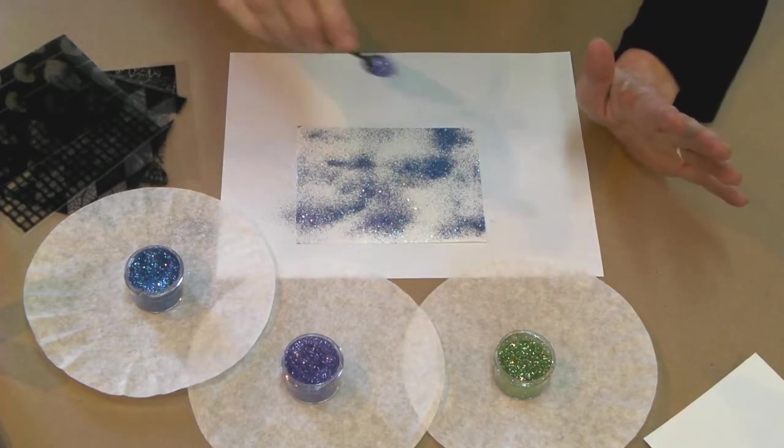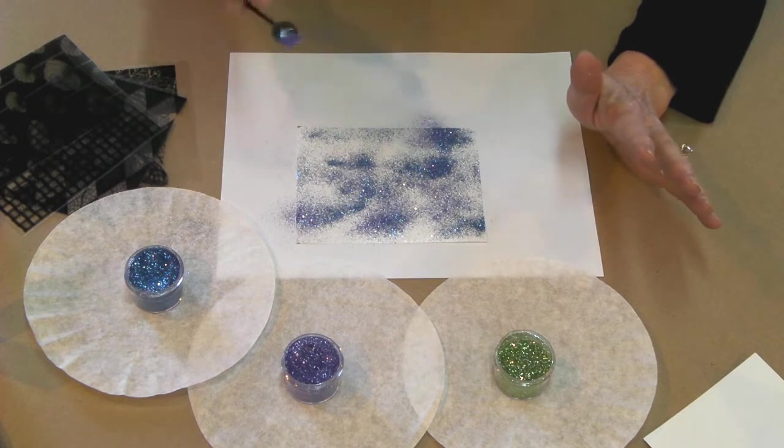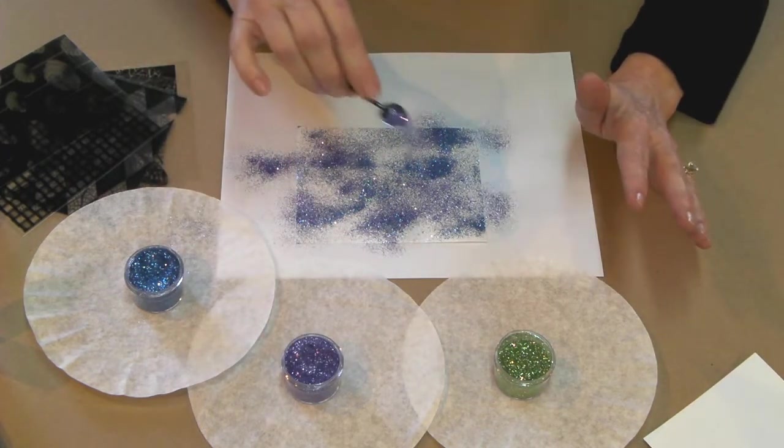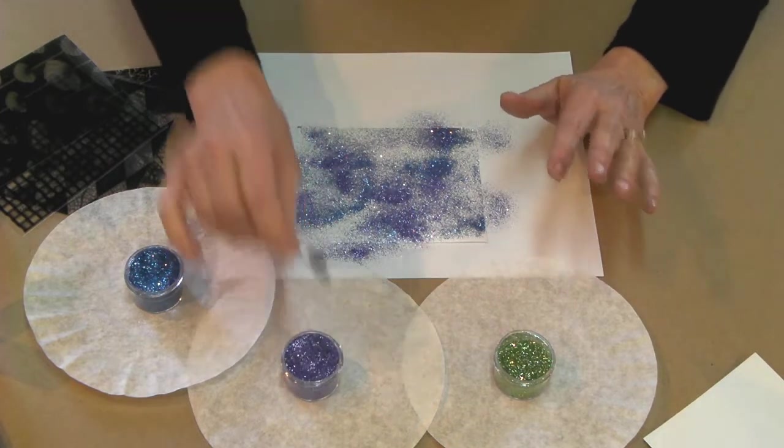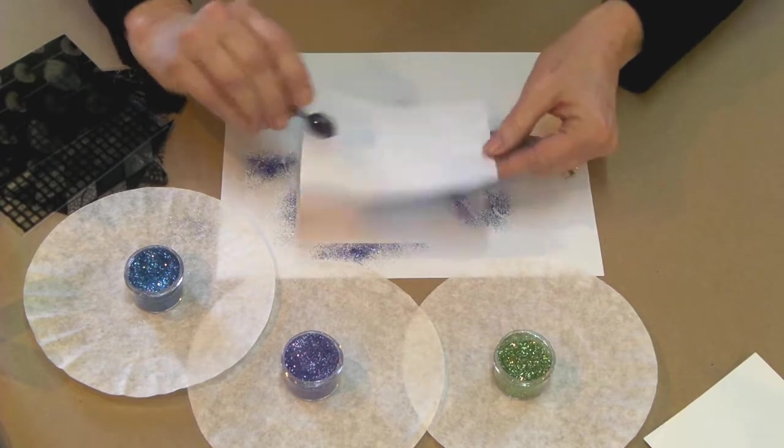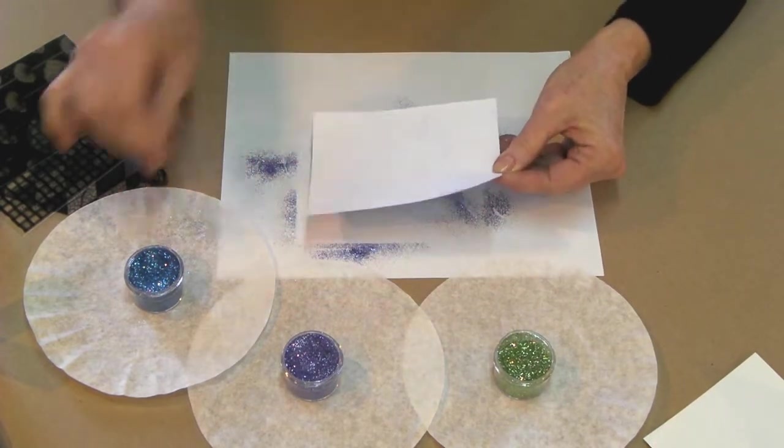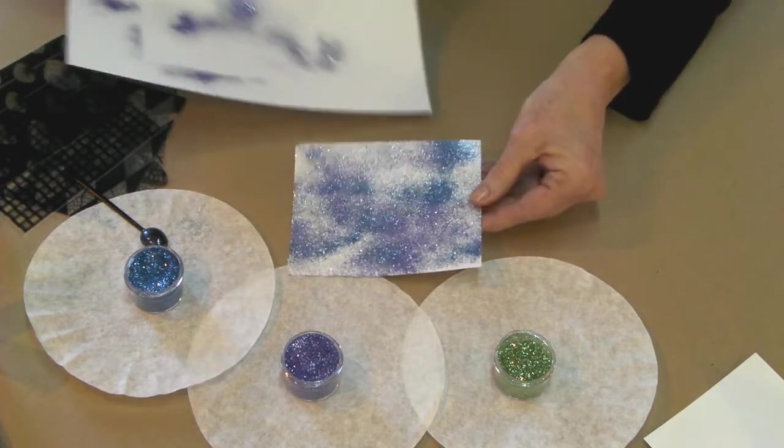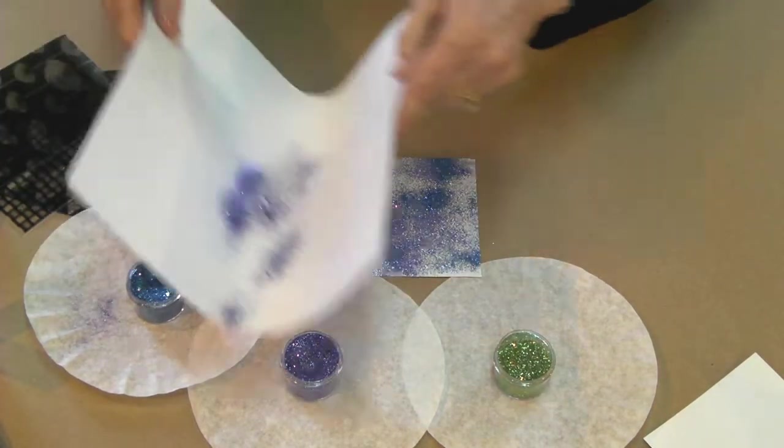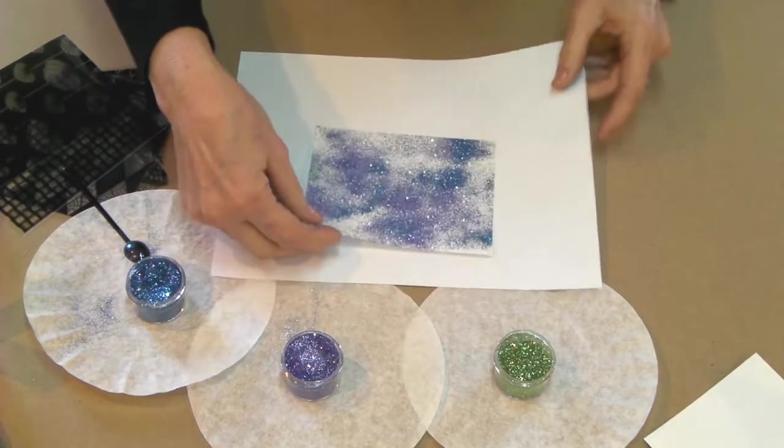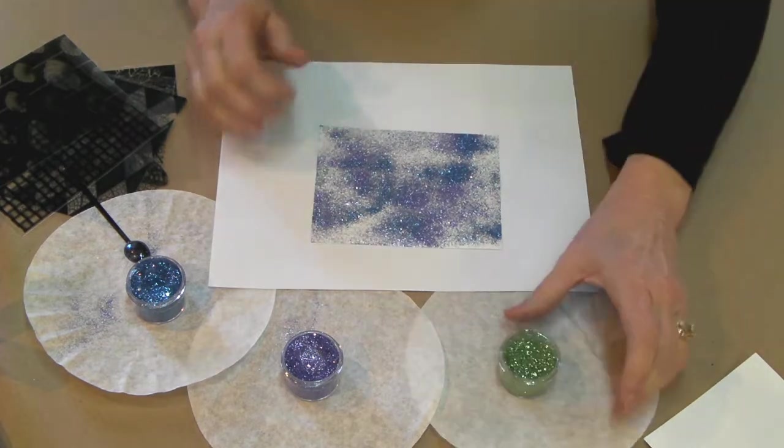Now let's go with color number two. Once again, just very random. There's just no rhyme or reason to this really at all. You just want to be very random with it. And again, just a quick flip. Let that extra go right off. That's looking nice. I like that. And again, we're just going to take our excess color and just put it right back into our jar.